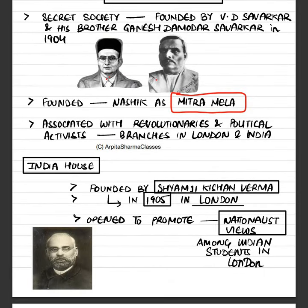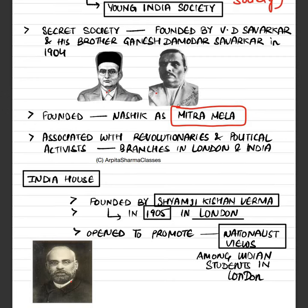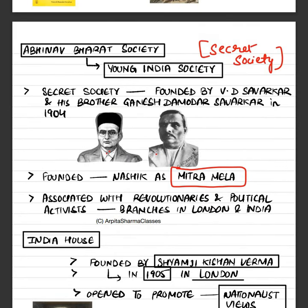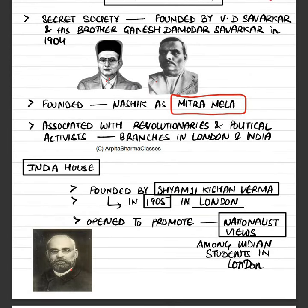During the same time period we have the important organization India House, founded by Shyamji Krishna Varma in 1905. In 1904 we had the Young India Society — Abhinav Bharat Society — and the next year the establishment of India House. Veer Savarkar also participated in this society. It was opened in London to promote nationalist views among Indian students who were living and studying in London, because Savarkar was of the viewpoint that Indians spread across the world should come together and fight off the British.